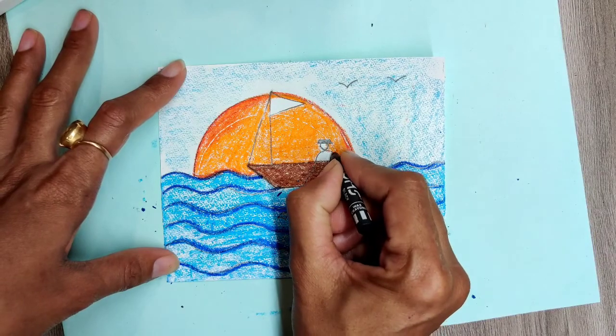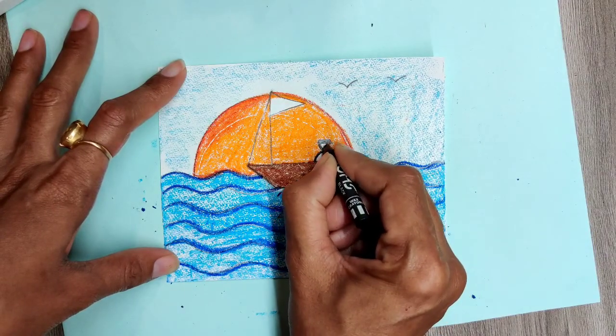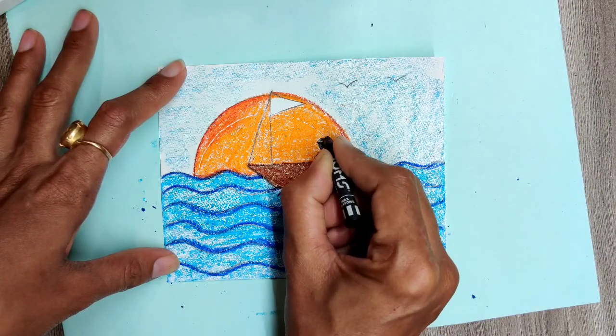Fill black color in the figure and draw an outline on the boat with black color.